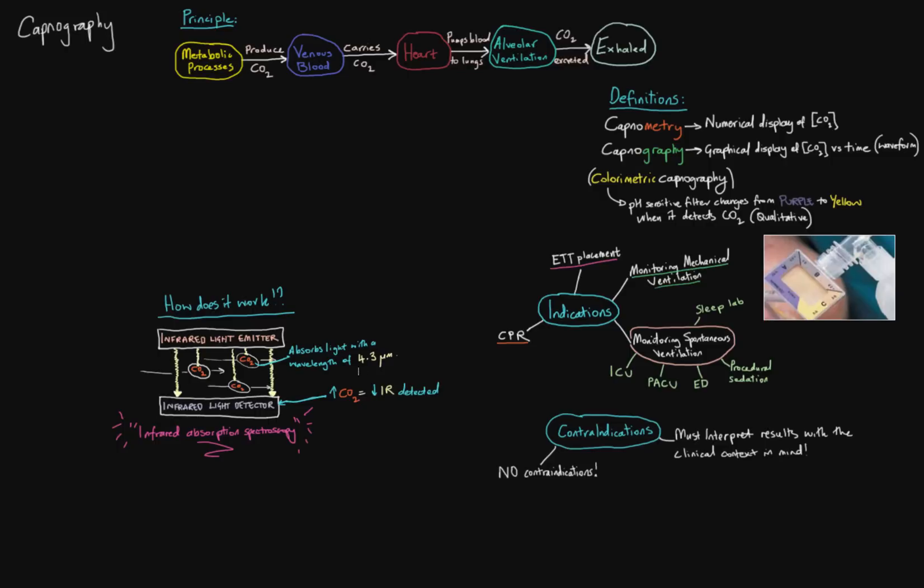Now CO2 will absorb this wavelength of light. So the more CO2 is passing through your detector, the less of this light that is emitted is going to get picked up by your detector. So if you know how much light you're emitting and you know how much you're detecting, you can therefore deduce how much CO2 is absorbing whatever the difference is. That's the basic principle, and this is the most common way that CO2 detectors are working nowadays.